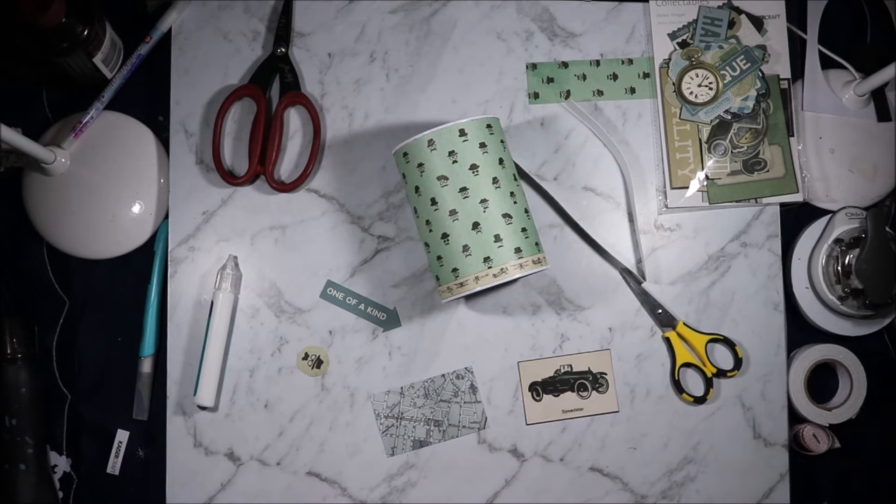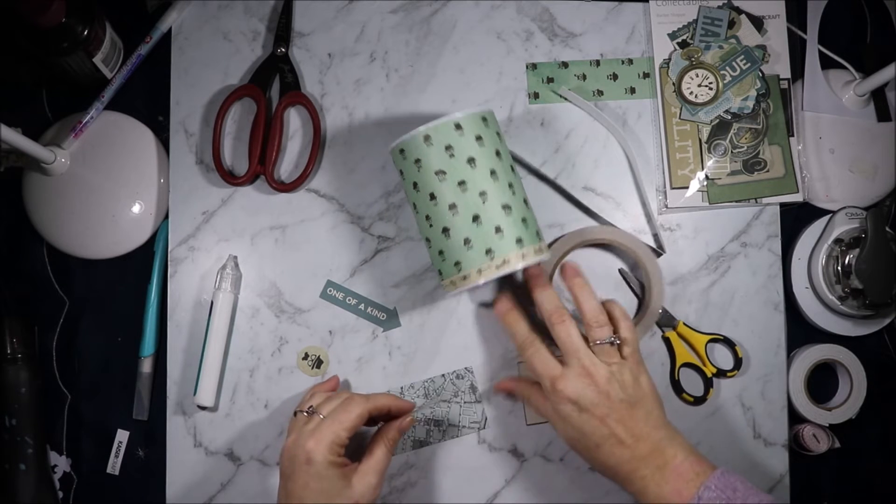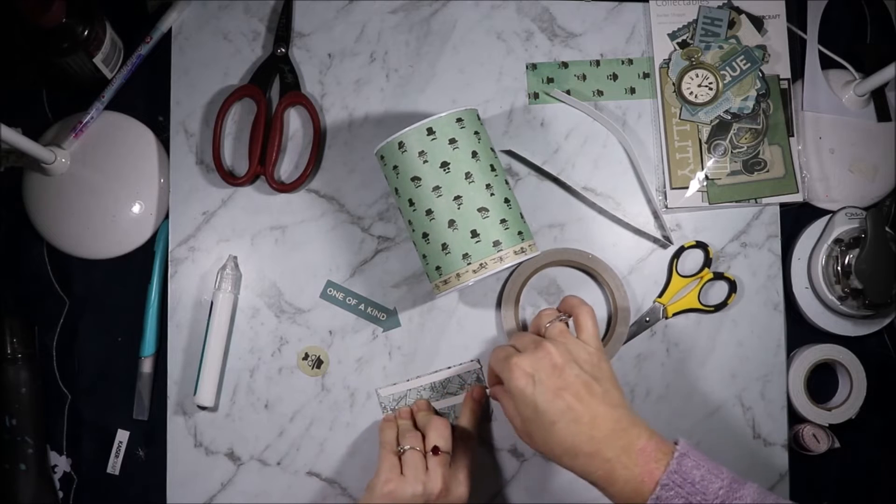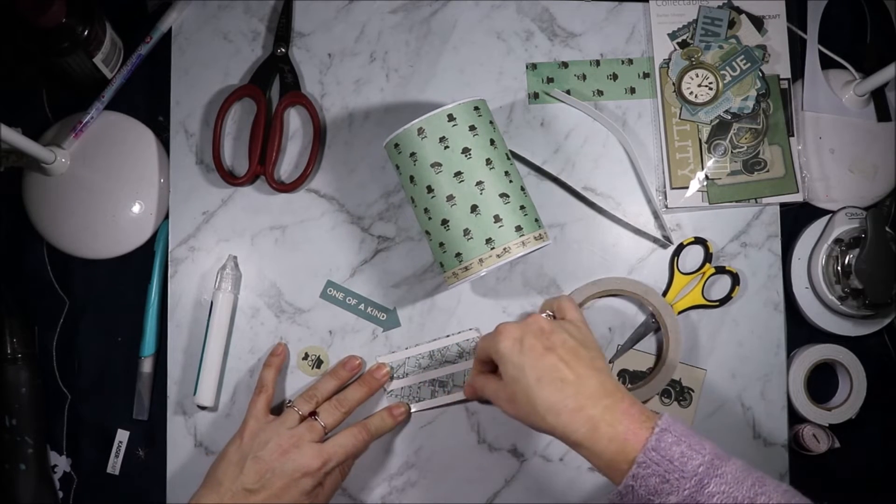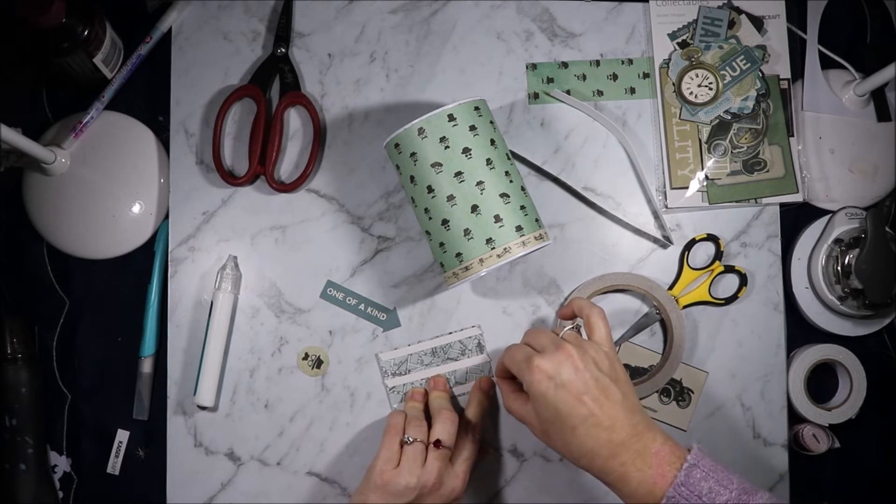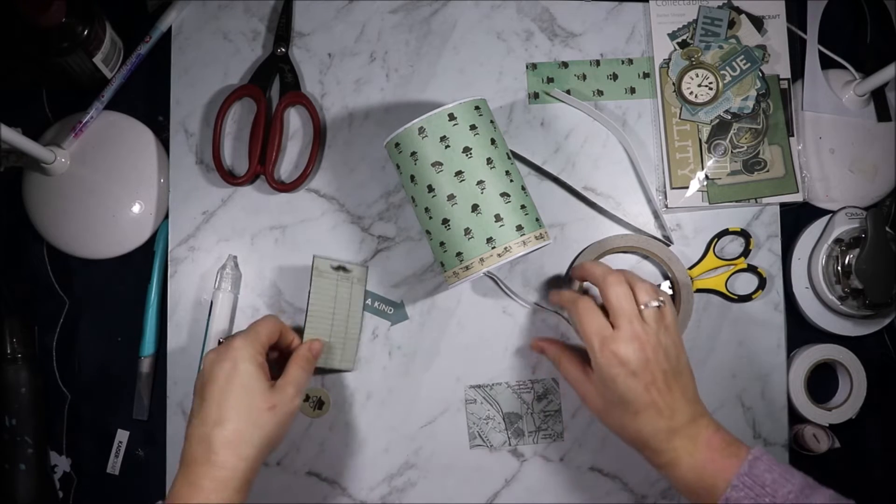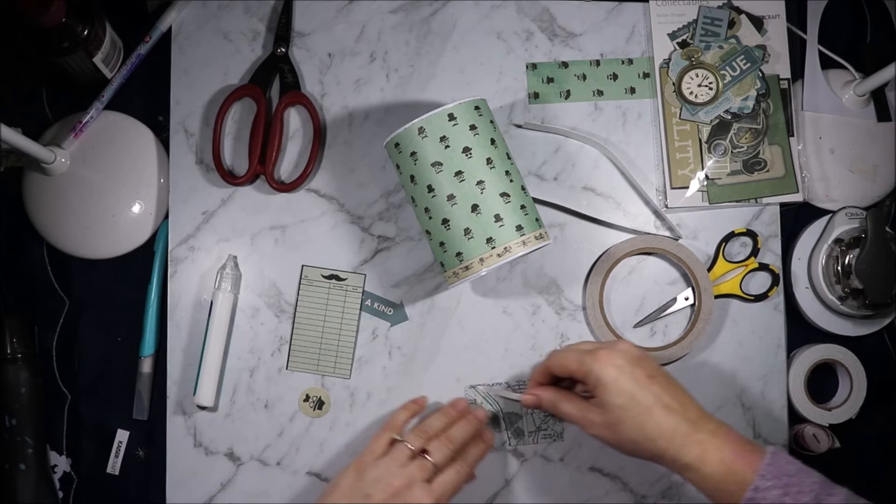Now because the tin curves I actually use extra tape to make sure that it stays stuck to the curve and I run the tape in the direction of the curve. For that one I'm putting the tape lengthwise, for this one I'm going to put it horizontally.